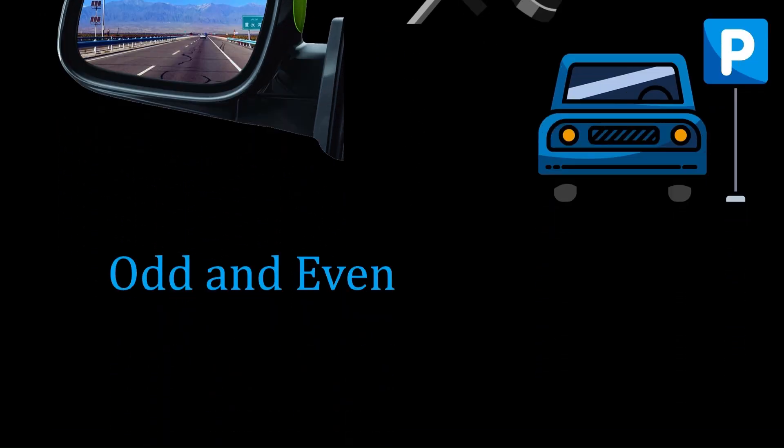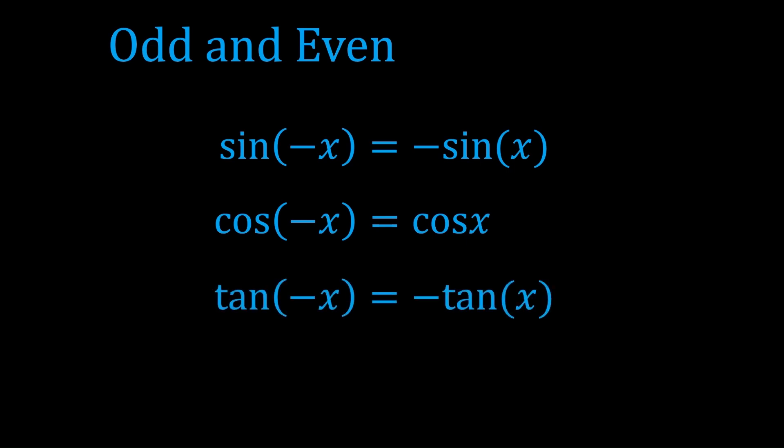A very common category of trig identities are the odd and even ones. Sine is an odd function, which means if you have a minus sign in the input, you can just take it outside. Cosine is an even function, which means if you have a minus sign in the input, just ignore it. Tan is an odd function, so it behaves like sine in the same way.